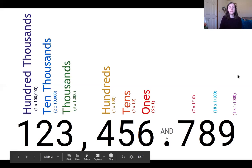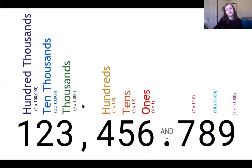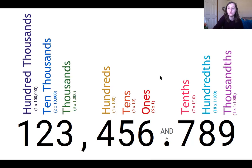If we look at this number that I've made up for us here, it is 123,456 and 789 thousandths. I included in parentheses here not only the word form of each place, but also what that would look like in terms of number value. I'm going to go ahead and pull up the places of our different decimal numbers as well.